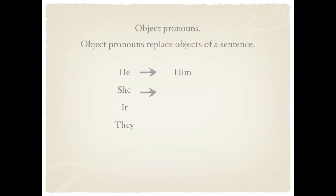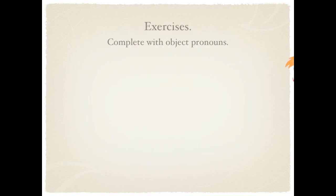Him, for he. She — the object pronoun is her. It — the object pronoun is it. They — the object pronoun is them. So: he→him, her, it, them.